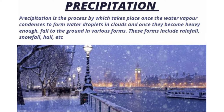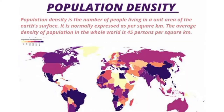Population density. Population density is the number of people living in a unit area of the earth's surface. It is normally expressed as per square kilometer. The average density of population in the whole world is 45 persons per square kilometer.